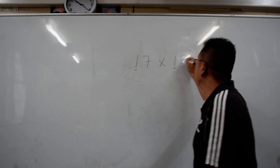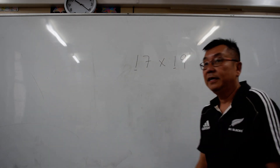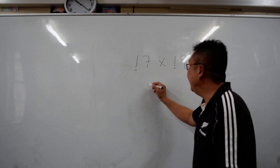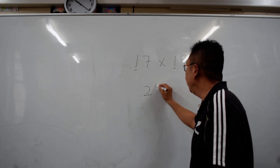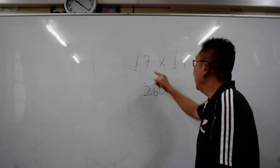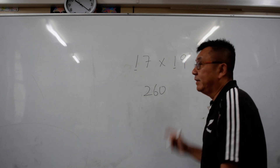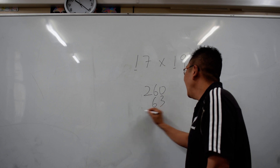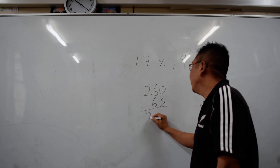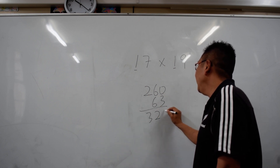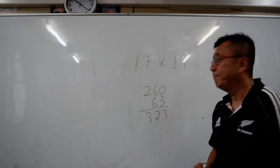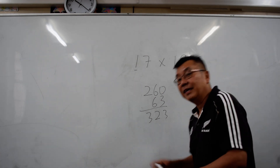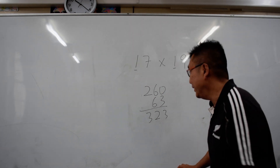17 times 19. So 170 plus 90 will give you 260. And then 7 times 9 is 63. Add them up and it is going to be 323. Please check your answers again because I am not totally sure.